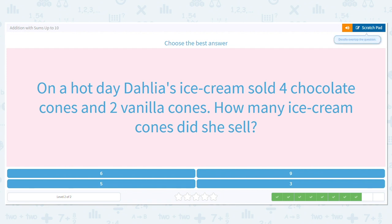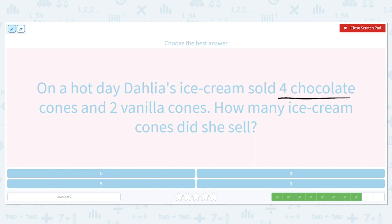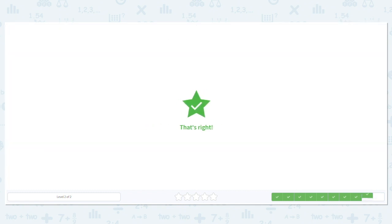Okay. How many chocolates? How many vanillas? And how do we know we are adding? What tells us in the question? How many? How many means add. Okay. So what is four plus two? It's six. So she sold six ice cream cones.